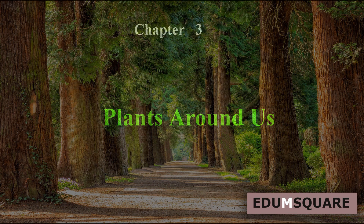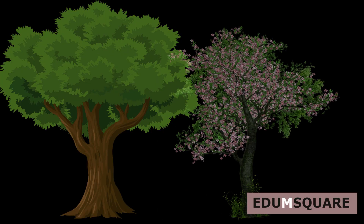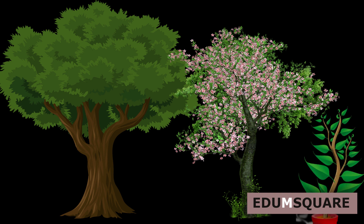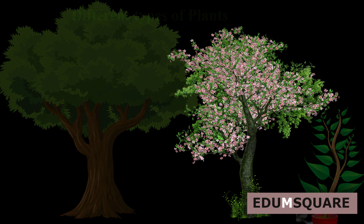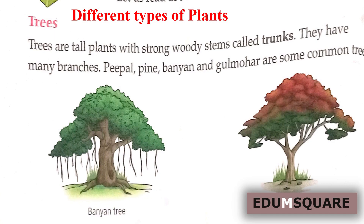We can see a lot of plants around us. Some are big, some are small, some are very small, and some are with weak stems. So there are different types of plants. Let's read about different types of plants.